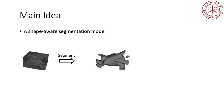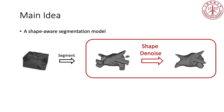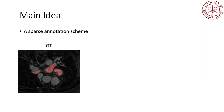Our main idea consists of two aspects. First, we build a shape-aware segmentation model. Given a segmentation mask, we propose a network that can perform shape denoising. However, we have no full mask supervision to train this shape denoising network. Therefore, we adopt a self-taught learning strategy. In addition to the shape-aware segmentation model, we also propose a sparse annotation scheme.